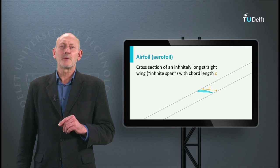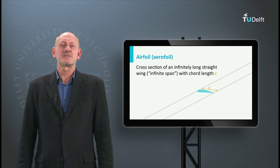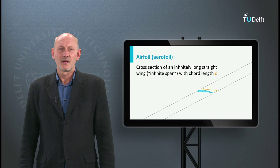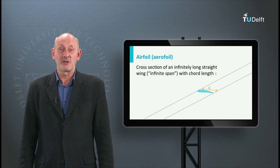First of all, when we talk about airfoils we assume this is the cross-section of an infinitely long constant chord wing. This is what we call a two-dimensional situation.